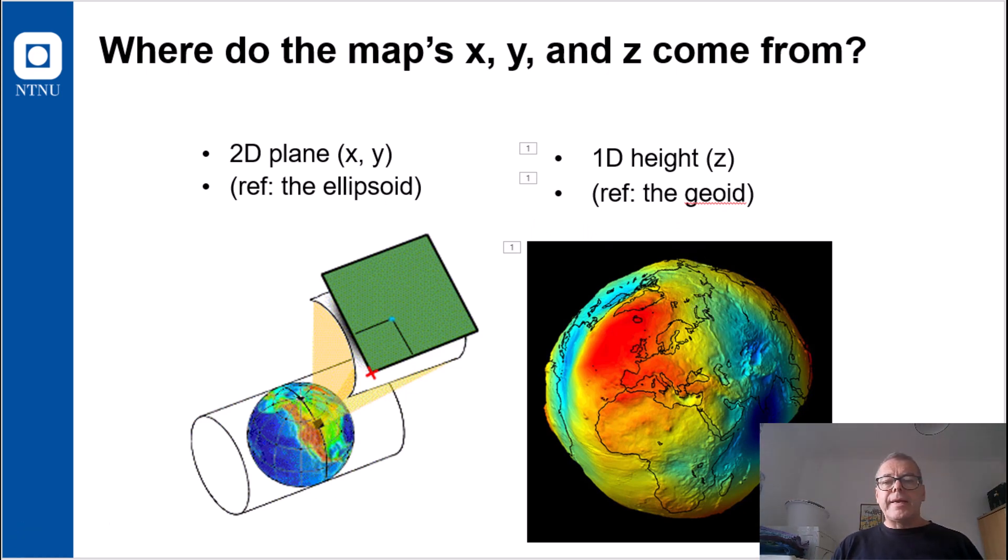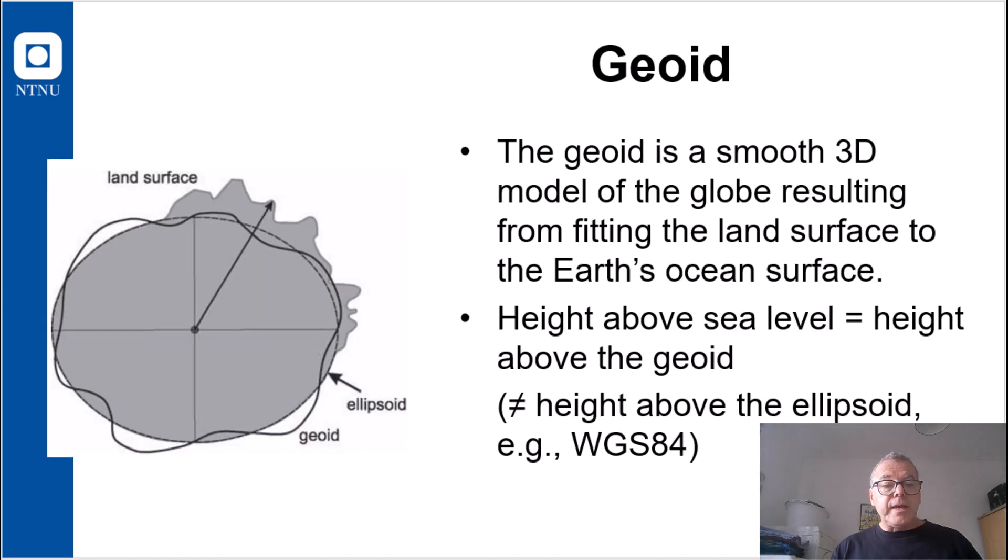But what is a geoid? A geoid is a theoretical surface where the level of the world's ocean is extended below the continent. And that is why we say height above sea surface. It relates to the geoid. Height is not measured related to the ellipsoid.